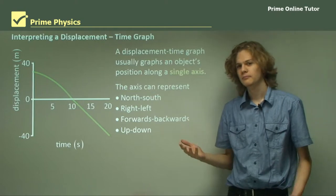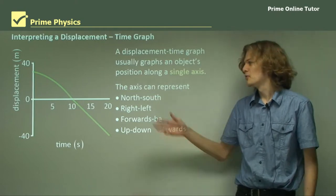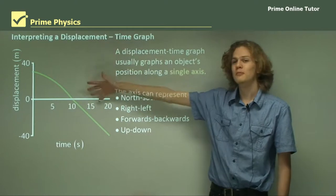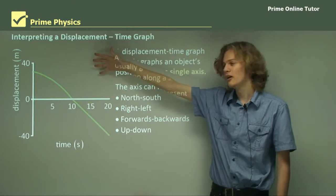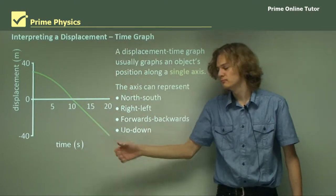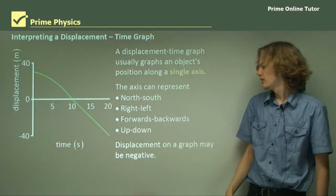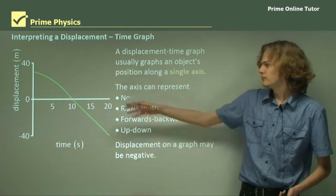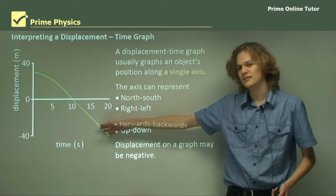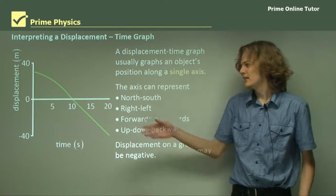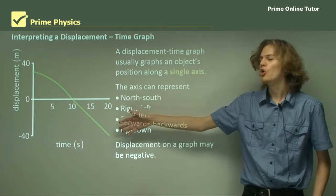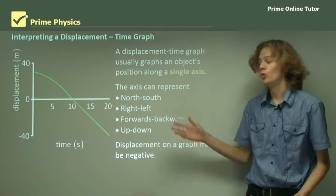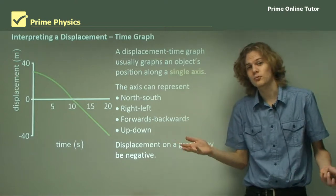Or up and down, which would make most sense in this configuration, because if it's above the line it's up, and if it's below it's down. Now, displacement over a graph may be negative, meaning that if it's less than zero, it simply means the object is below the starting point, or to the left of the starting point, or to the south of the starting point, and so on.